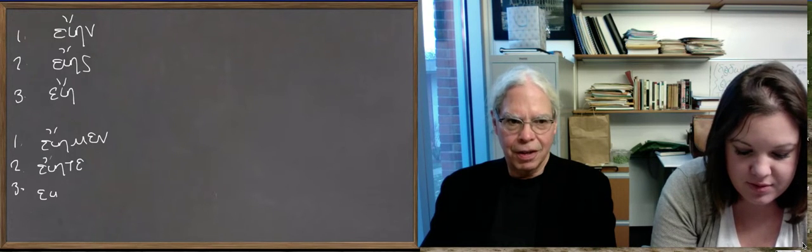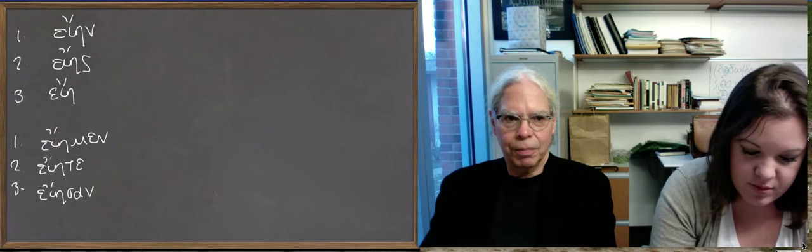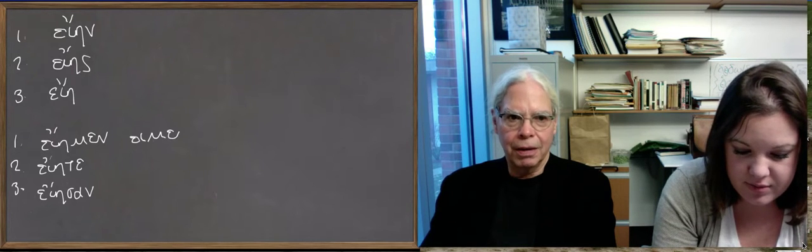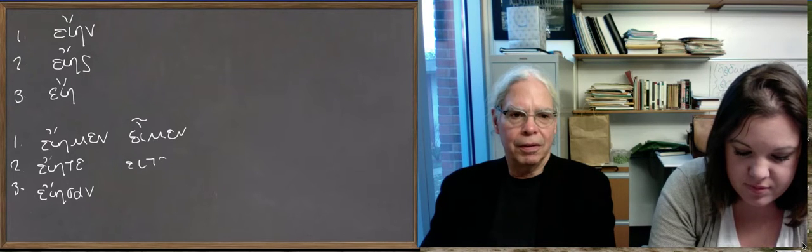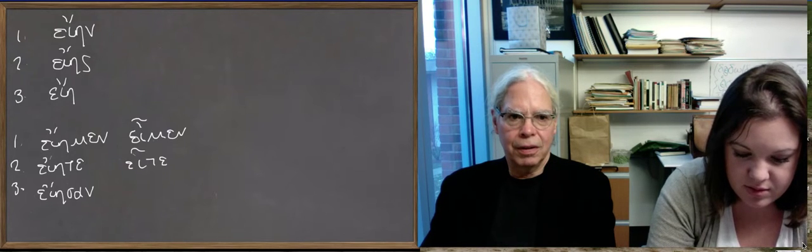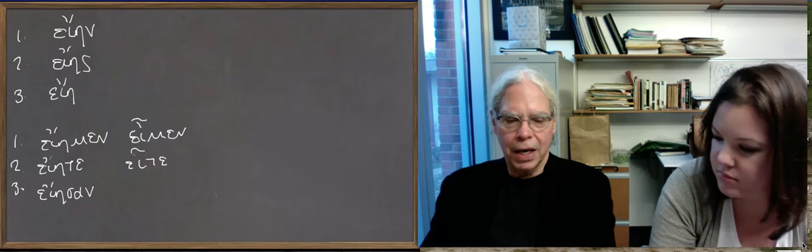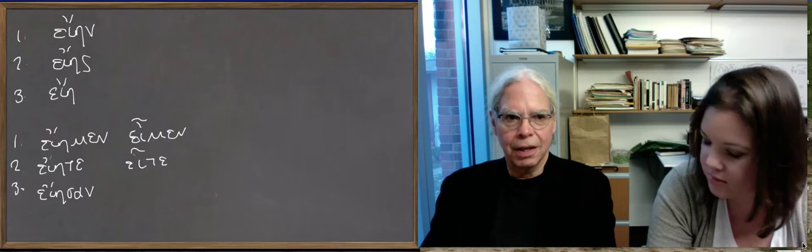εἴην, εἴης, εἴη, and then put next to them εἴημεν with a circumflex, εἴητε, and then just the iota: εἴην, εἶεν.